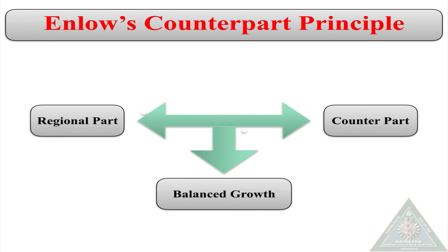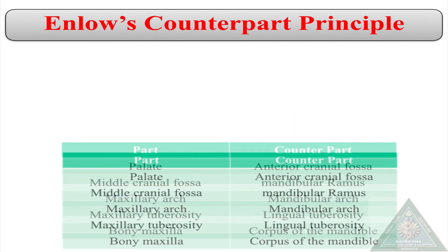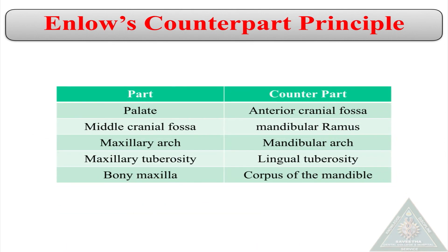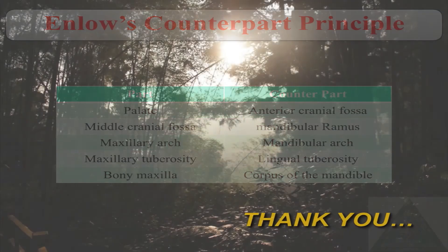The Enlow counterpart principle states that the growth of any structure relates to other structures and geometric counterparts in the face and cranium. Here are examples of the parts and their counterparts.